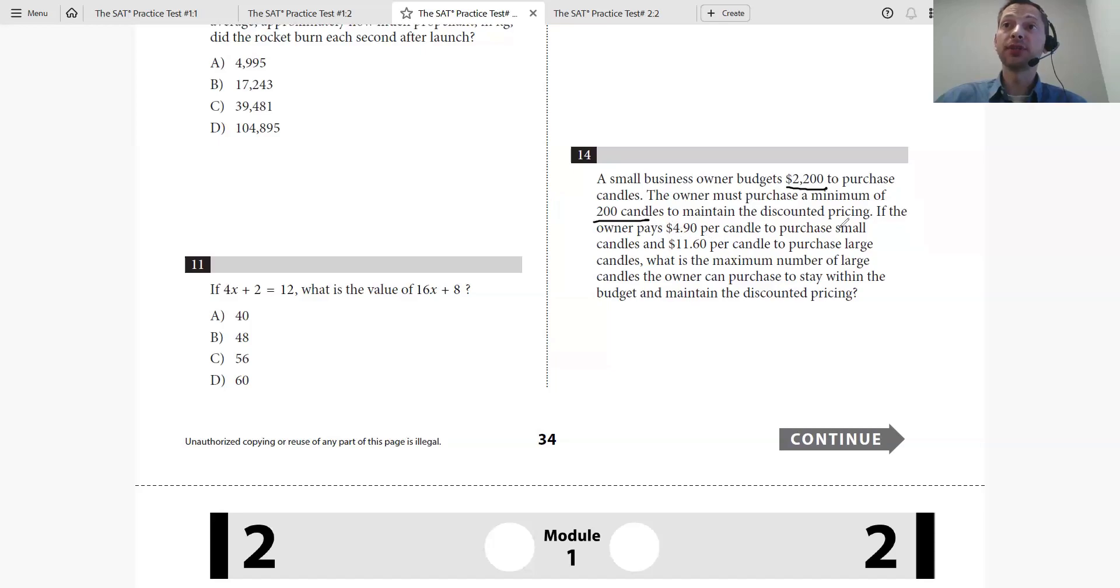The owner pays $4.90 per candle to purchase small candles and $11.60 per candle to purchase large candles. It looks like there are small candles and large candles. Let's say X is the number of small candles and Y is the number of large candles. He needs to purchase a minimum of 200 candles, so we know that X plus Y has to equal 200.